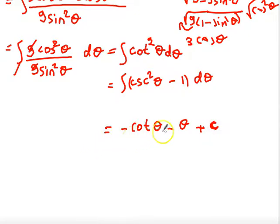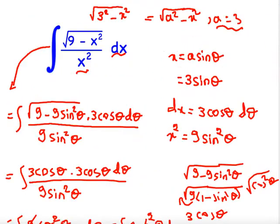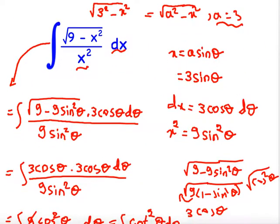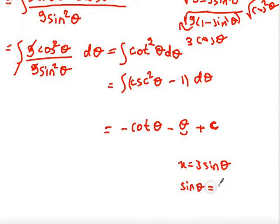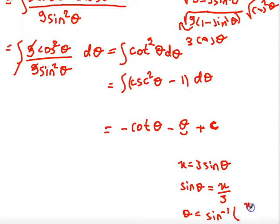But we need the answer in terms of x, not θ. Since our substitution was x = 3·sinθ, we have sinθ = x/3, so taking the inverse sine of both sides gives θ = sin⁻¹(x/3).